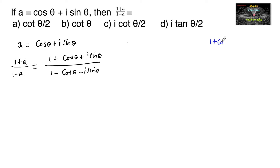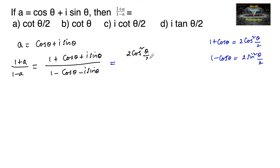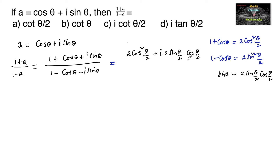We know that 1 + cos θ = 2 cos²(θ/2) and 1 − cos θ = 2 sin²(θ/2). Also, sin θ = 2 sin(θ/2) cos(θ/2). So the numerator becomes 2 cos²(θ/2) + i · 2 sin(θ/2) cos(θ/2), and the denominator becomes 2 sin²(θ/2) − i · 2 sin(θ/2) cos(θ/2).